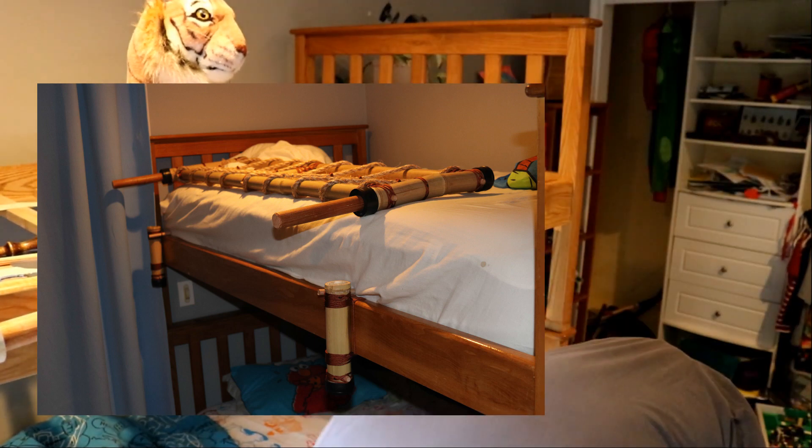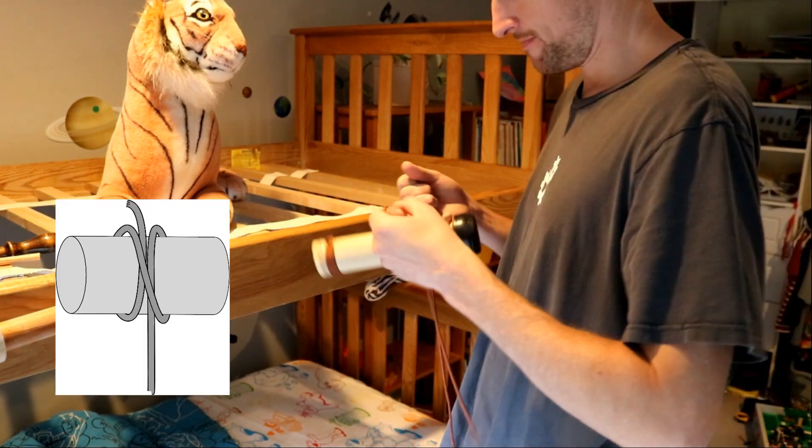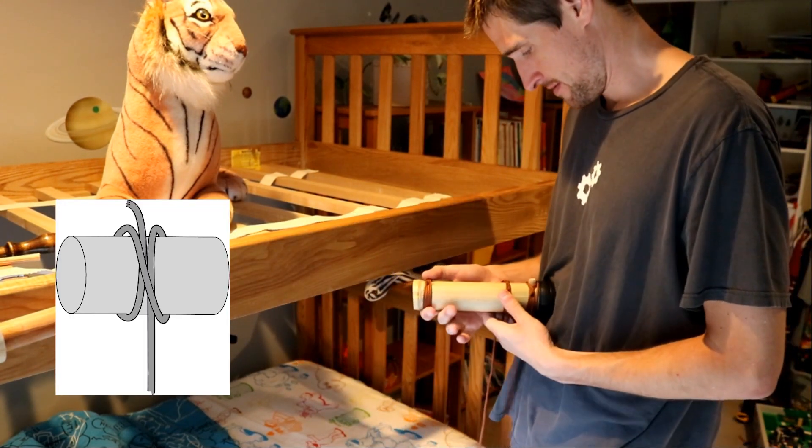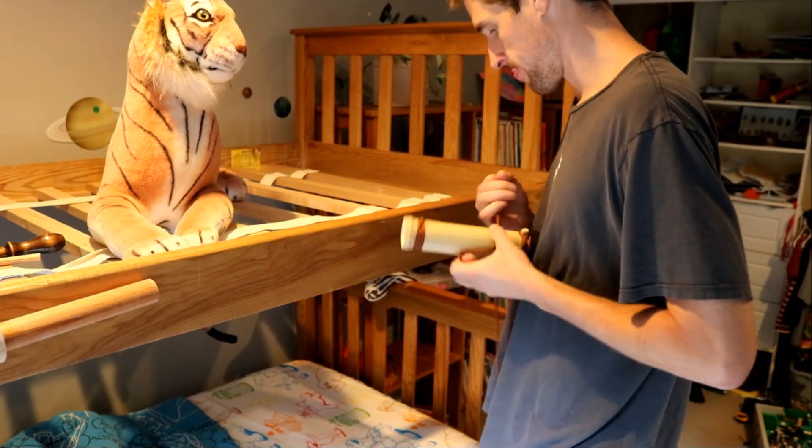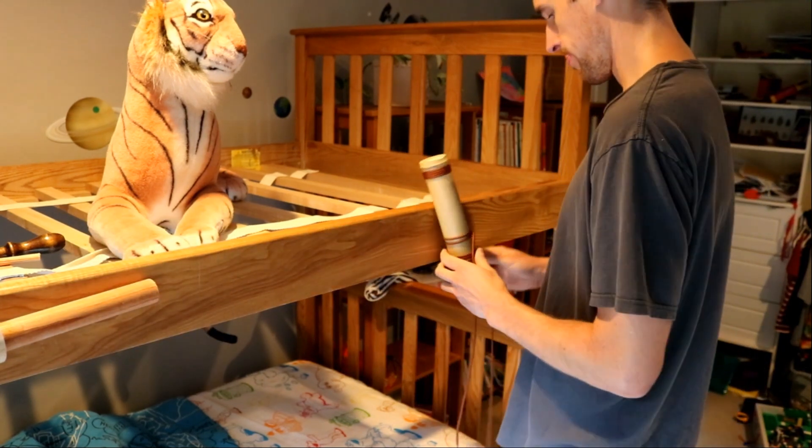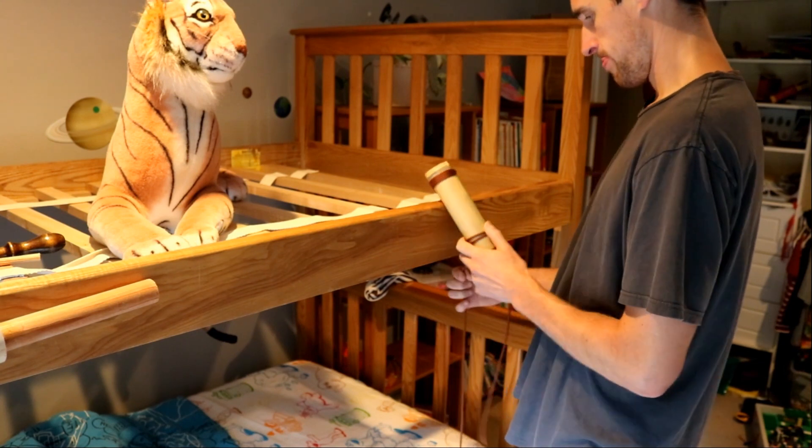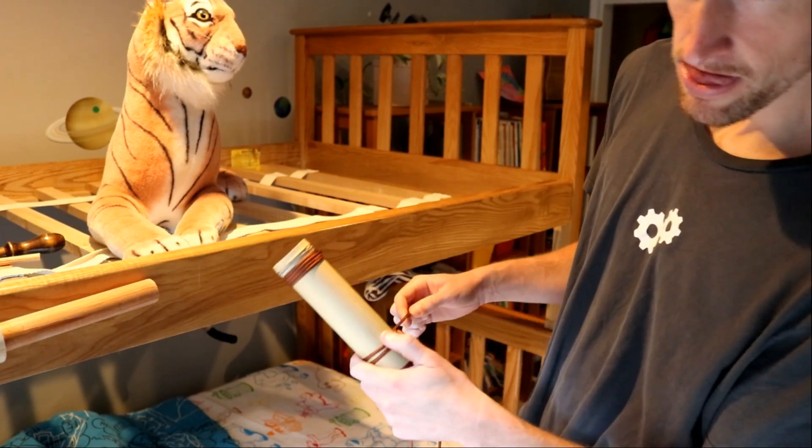Most square lashings are started with what's called a clove hitch and there's a picture of a clove hitch real quick and there's a link in the description for how to tie it. I personally over years have settled on a knot called a constrictor knot.